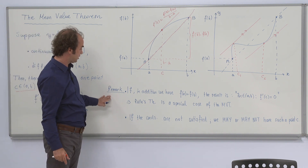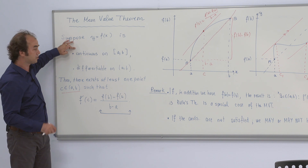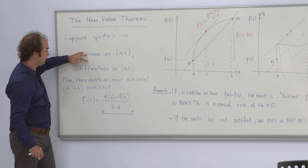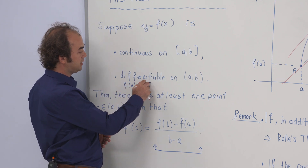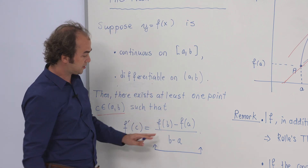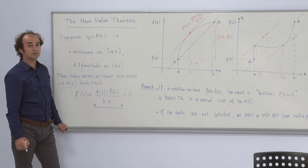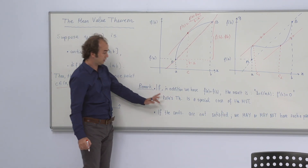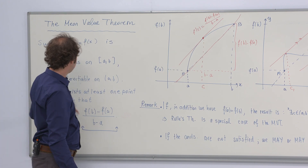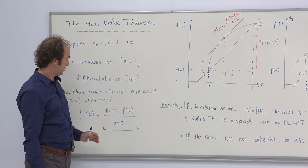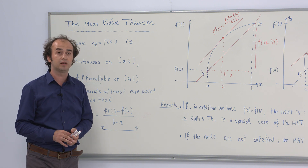Let us note some remarks. If f(a) equals f(b), then we have continuity on the closed interval [a, b] and differentiability on the open interval (a, b), with f(a) equal to f(b) — these are nothing but the conditions of Rolle's theorem. In the special case where f(b) equals f(a), the numerator becomes zero and you get the result of Rolle's theorem. So Rolle's theorem is a special case of the mean value theorem. Don't forget that if the conditions are not satisfied, the theorem does not apply and tells you nothing.